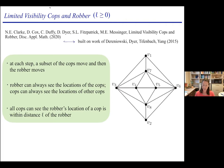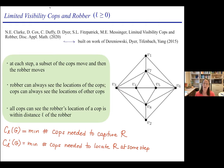We have a couple of graph parameters associated with this model. C_L(G) is the minimum number of cops needed to guarantee capture of the robber, meaning a cop lands on the vertex occupied by the robber. This is a deterministic model, not probabilistic, and capture must happen in finite time. There's also a parameter with a prime: the cops need to locate the robber, meaning either seeing the robber or knowing where the robber is.